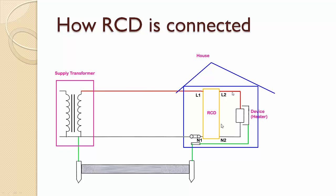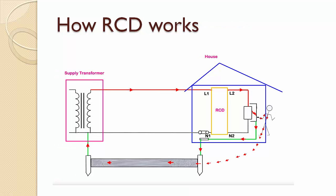An RCD senses the difference between the line and neutral currents and shuts down the supply if the difference is more than say 30 milliampere, because the RCD interprets this difference as a leakage current which could be potentially passing through a person's body.